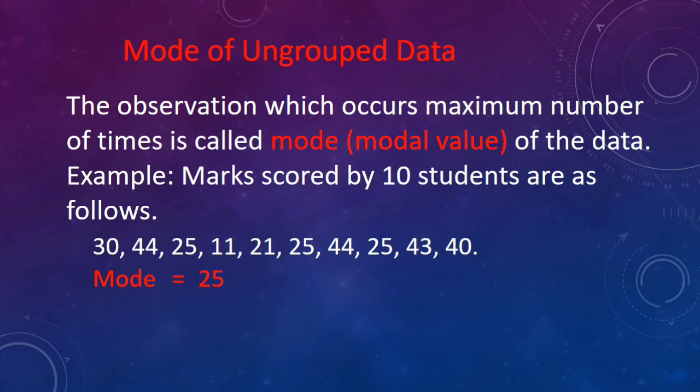The data as it is collected or the data in the raw form is known as ungrouped data. When the data is written in the form of a frequency distribution or it is classified in groups, it will be known as grouped data. Here, we are going to discuss only the mode of ungrouped data or the data as it is collected.